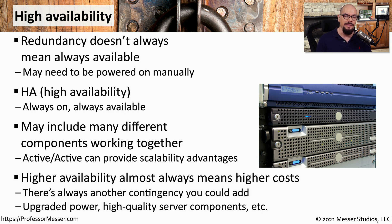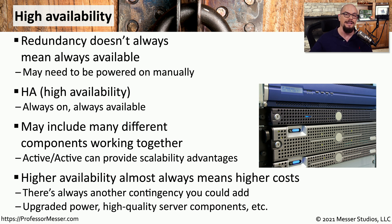High availability does come with a cost. If you need to have high availability of firewalls, that usually means that you're going to need multiple firewalls in place, which means you're going to need to buy two of those to implement some type of HA configuration. There is always some type of additional contingency that could be created — it could be multiple firewalls, then multiple routers, then multiple switches, which might lead to multiple power systems, and potentially multiple internet providers, and so on. You can always increase the amount of high availability, but that's also going to increase the costs associated with that implementation.